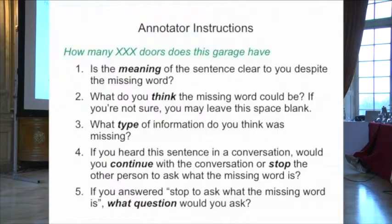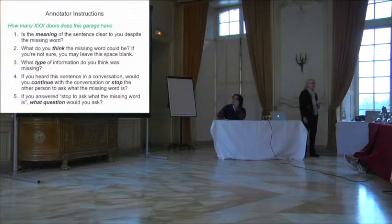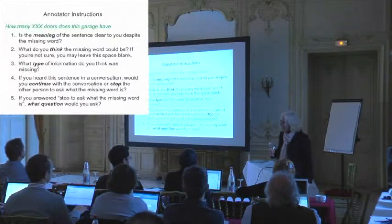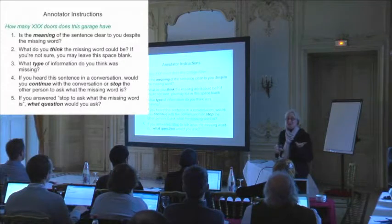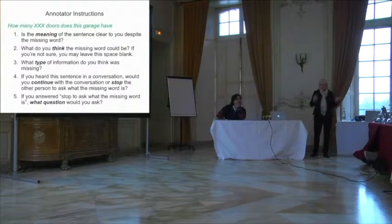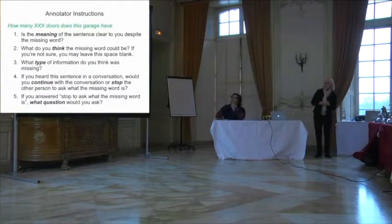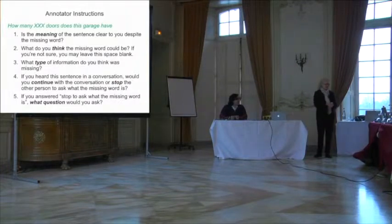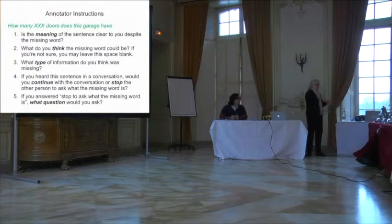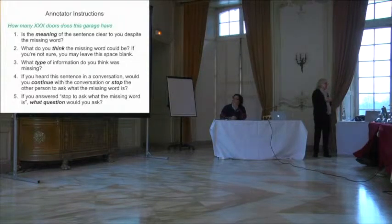These are the questions we asked people. For example: 'how many blank doors does this garage have?' We asked: is the meaning of the sentence clear to you despite the missing word? What do you think the missing word could be? — if people couldn't guess, they could leave a blank; it wasn't forced choice. What type of information did you think was missing? We gave them examples: is it a noun, a verb, an adjective, an adverb, a preposition? People generally understood what we meant. If you heard the sentence in a conversation, would you just continue or stop and ask a question? And if you would stop, what question would you ask?